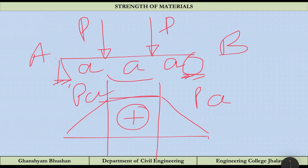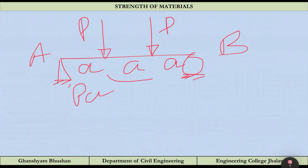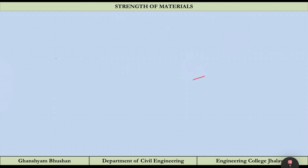This point should be very clear: when we refer to bending in a question, we are referring to the pure bending condition. We are not considering cases where there is variation in the bending moment — that would bring in shear force variation as well. In pure bending, there is no variation in the bending moment; it remains constant.